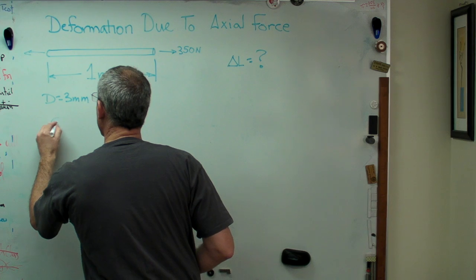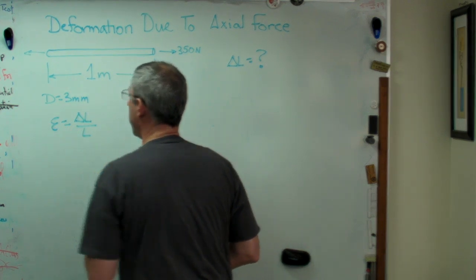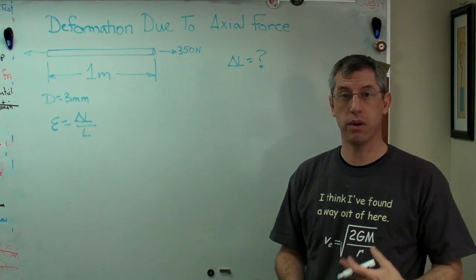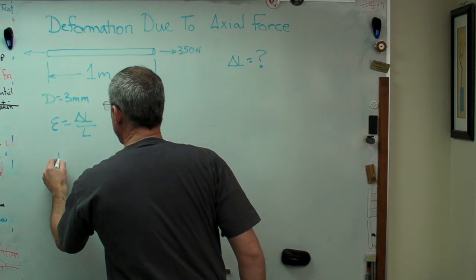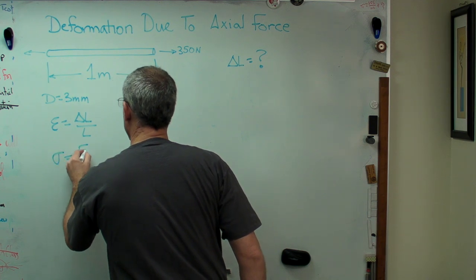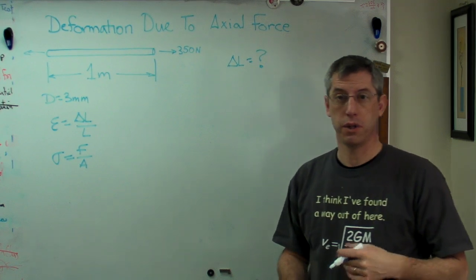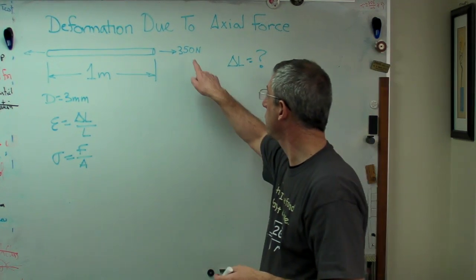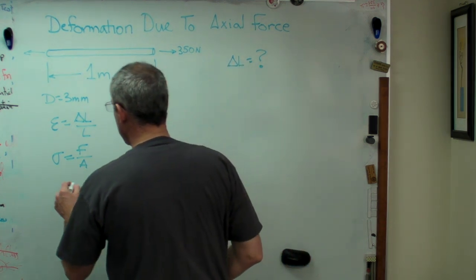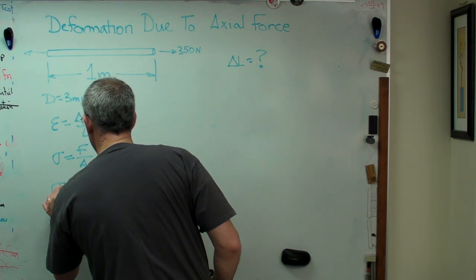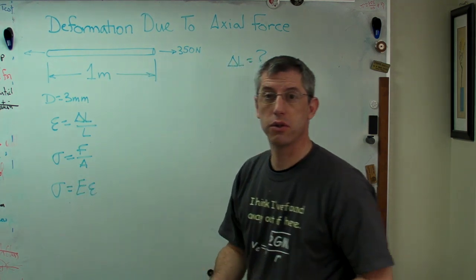The first one is the definition of strain, which is change in length over original length. The next thing we need is the definition of stress, which is force over area — we have a force, and we'll figure out an area in a minute. And the last thing we need is Hooke's Law, which relates stress to strain.